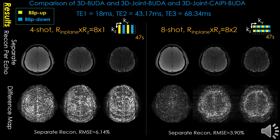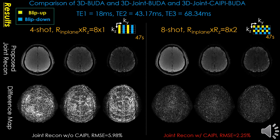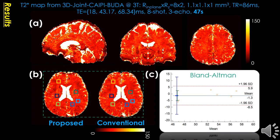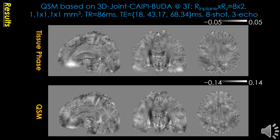Here are the conventional separate echo image reconstruction results, generated by conventional BUDA image reconstruction echo by echo. Here are the proposed joint echo image reconstruction results with and without KP acquisition. We adopt the joint image reconstruction with KP sampling due to the lowest RMSE. T2-star mapping is generated from the previous multi-contrast imaging results. The Bland-Altman plot suggests high agreement between the proposed technique and the conventional commercial sequence on the scanner. Here are tissue phase and QSM results generated from the previous multi-contrast imaging results.